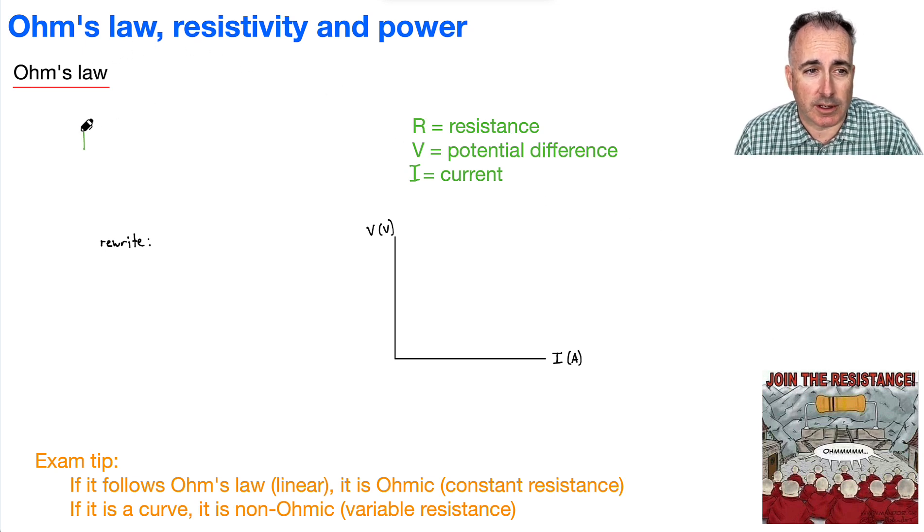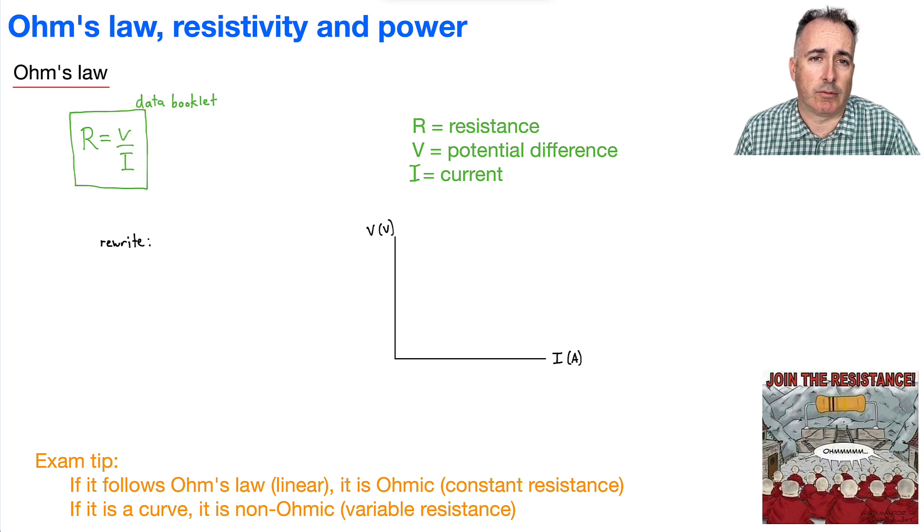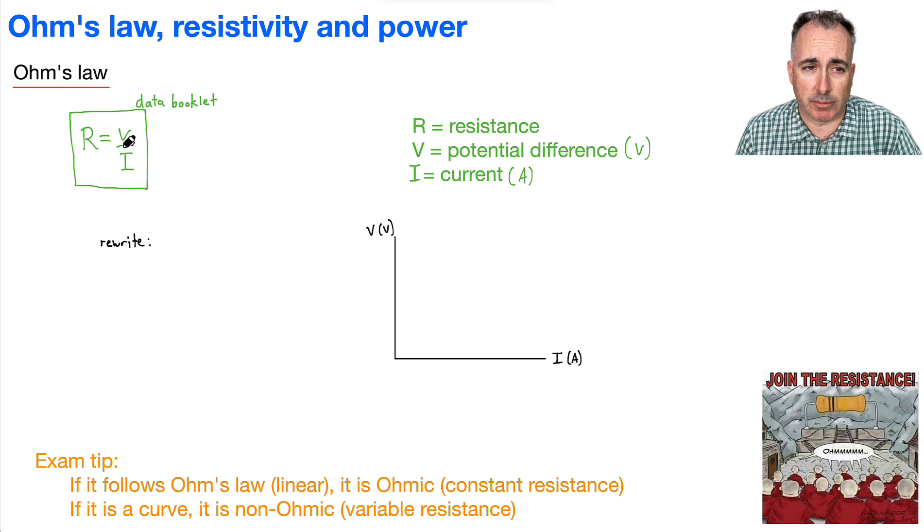We have an equation for it. It goes like this: R equals V over I. Let's remind ourselves, what are the units of everything? Well, potential difference, that's in volts. Current is in amperes, so you could say it's volts per ampere. But we do have a special unit for it, right? The resistance is measured in ohms.